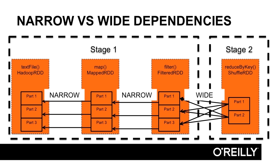If we then did a filter operation on the result of that reduce by key, that would again be a narrow dependency within stage two, so we would still only have two stages. This is a very important concept: we want to do as much as possible with narrow dependencies, and perform wide dependencies as little as possible.